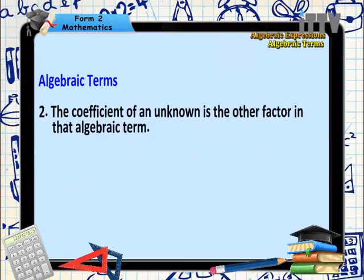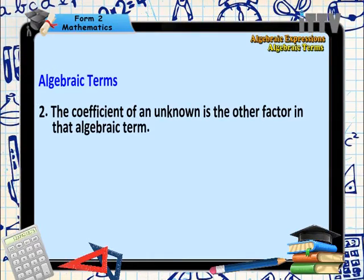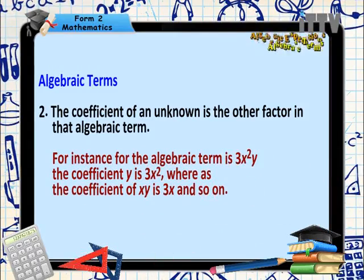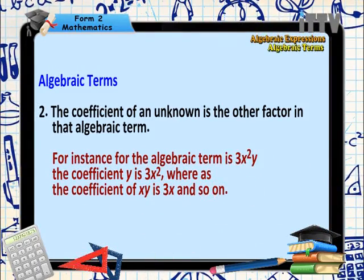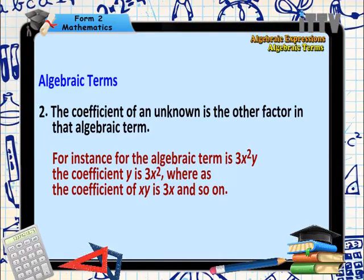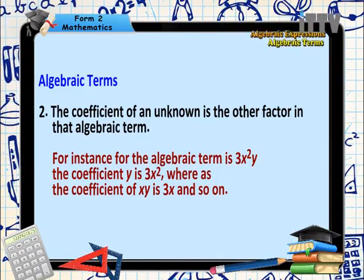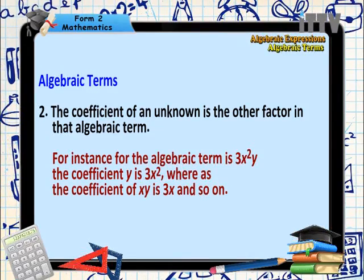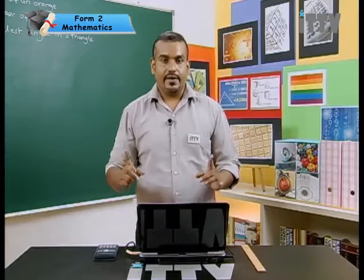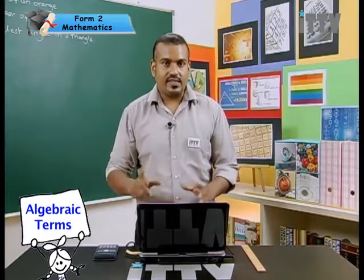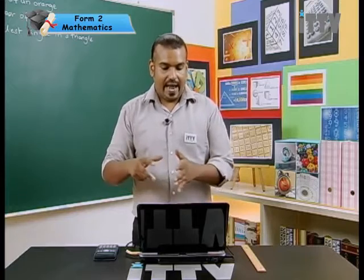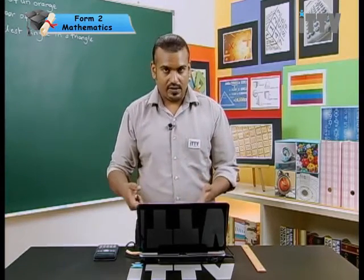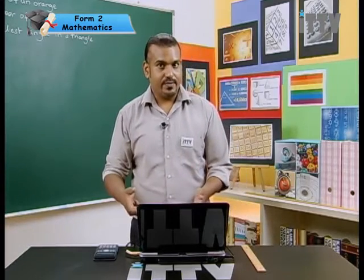Therefore, now you understand what are terms. Terms for an unknown can be X, Y, Z, P, Q, whatever alphabet, or symbols such as theta, alpha, beta, psi, phi, whatever it is.